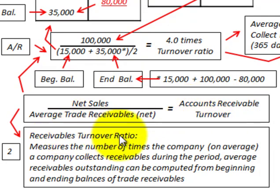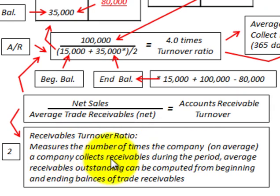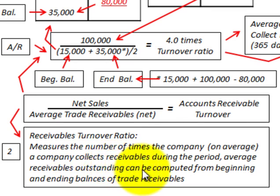The receivables turnover ratio measures the number of times, on average, a company collects its receivables during the period. The average receivables outstanding can be computed from the beginning and ending balances of trade receivables.